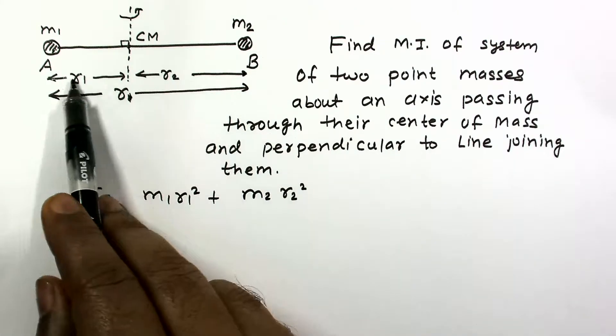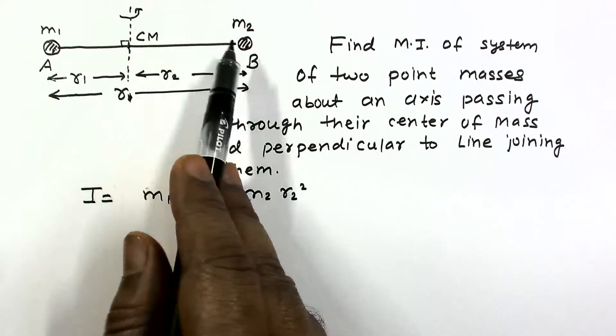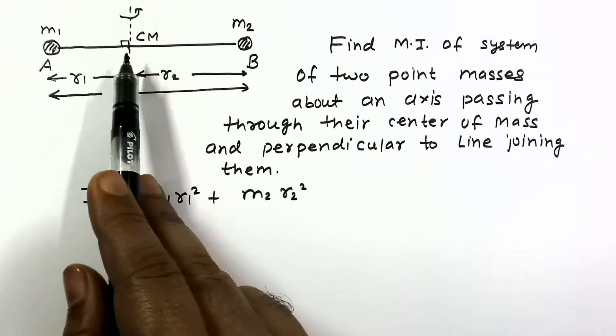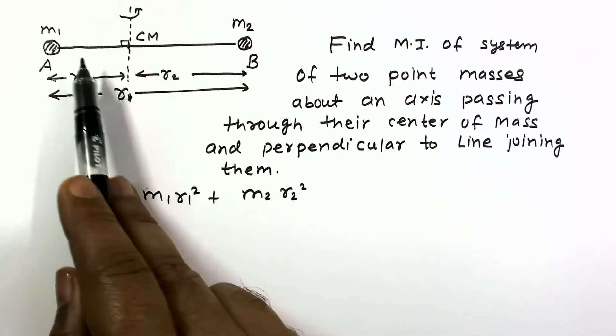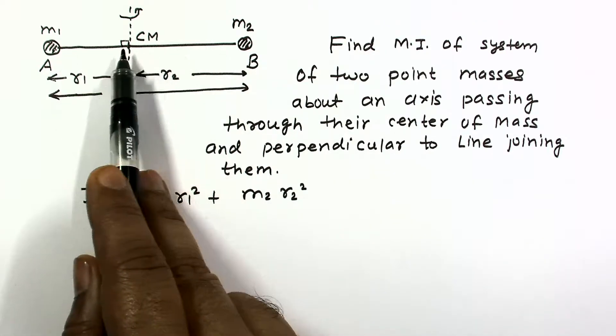Perpendicular distance R1, R2. Center of mass distance A, center of mass distance B. So center of mass is a point which divides the distance in inverse mass ratio.